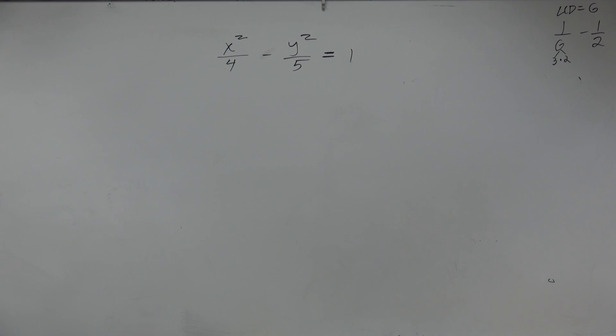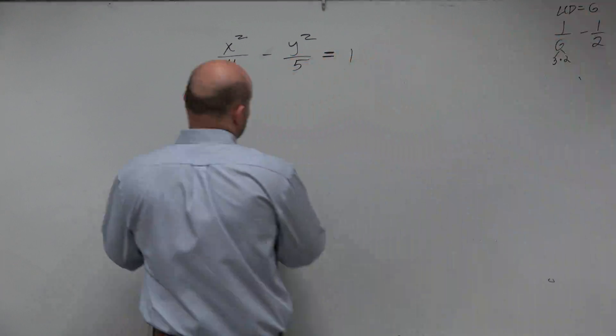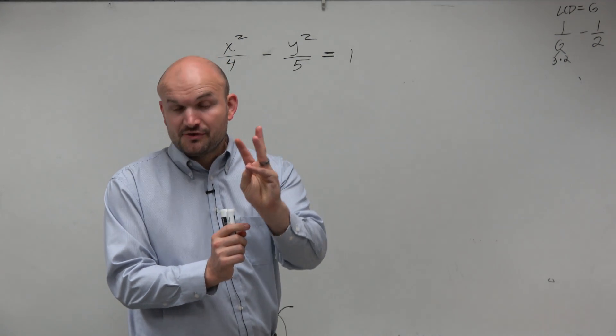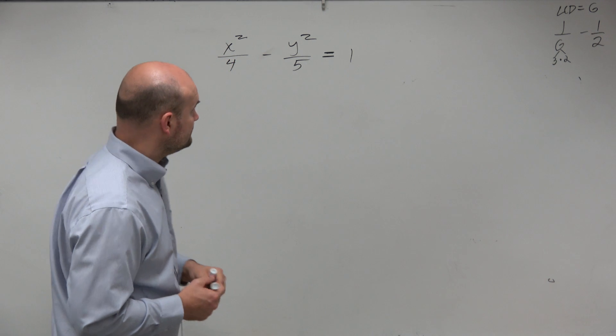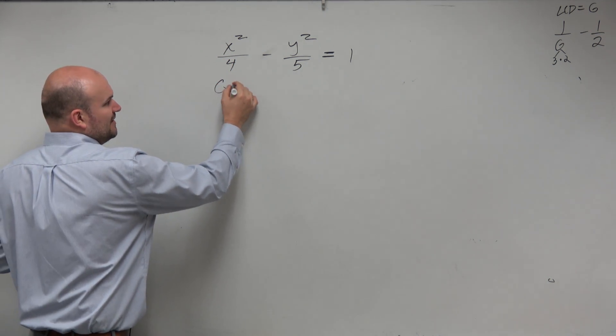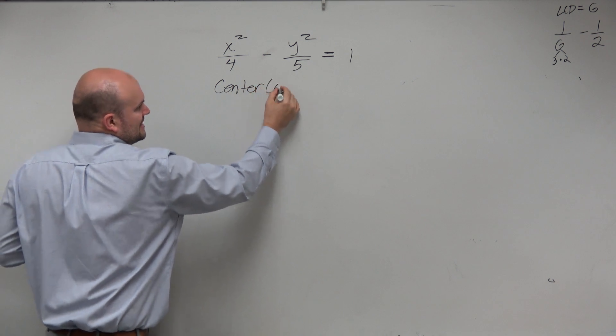OK, so got an equation, right? It's on the board. We want to be able to identify what are the vertices, the foci, and the asymptotes. So I'm going to ask you guys three things, and then I'm also going to show you guys how to graph it. So I think the easiest thing to identify right now is we can just tell that the center is at 0,0, right?